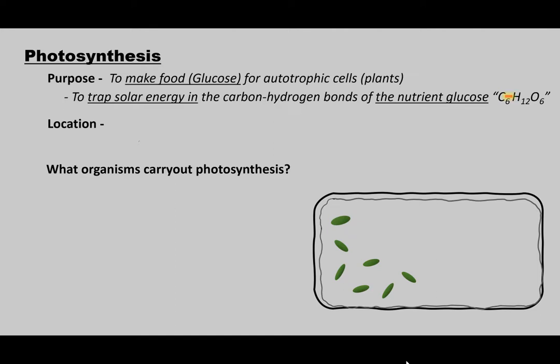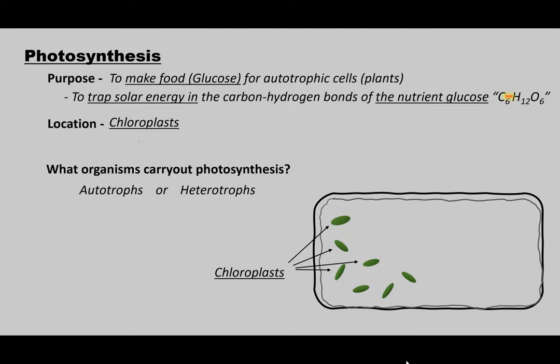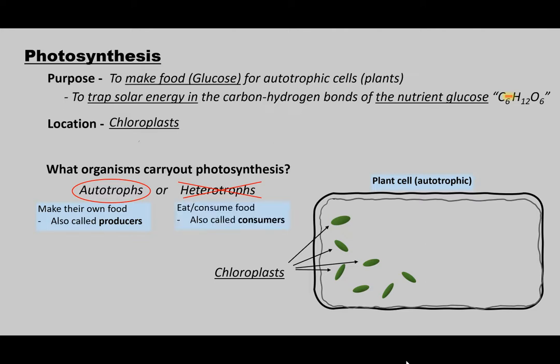This all happens at chloroplasts — kind of little green hockey pucks inside cells. What organisms carry out photosynthesis? Autotrophs, heterotrophs, both, or none? Definitely autotrophs, but not heterotrophs. Autotrophs are called producers because they produce their own food, like a plant cell. Heterotrophs, like us and other animals, we don't make our own food — we have to consume stuff, so we're called consumers.